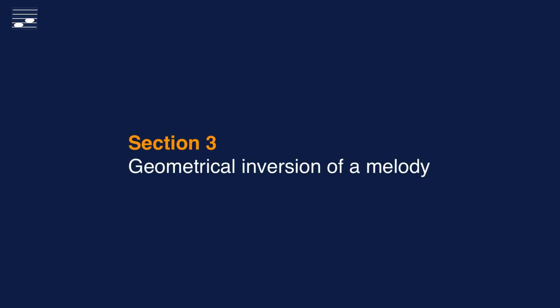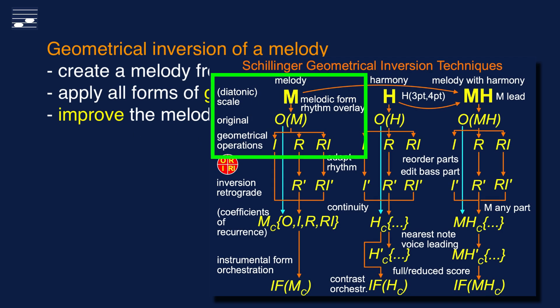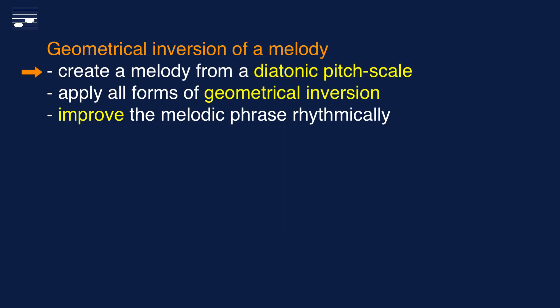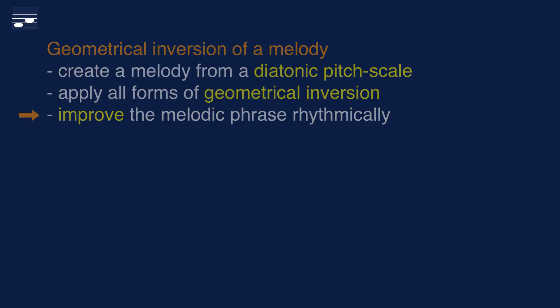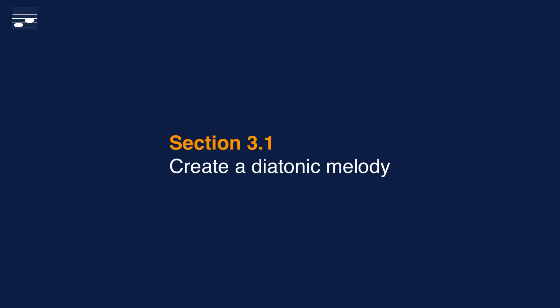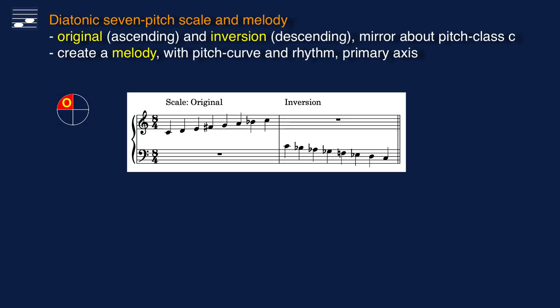Now that you saw the four fundamental inversion operations, let's look at a more realistic melody example. We'll create a diatonic melody, apply all geometrical inversion variations, and improve the melodic phrase rhythmically. You may create a diatonic melody from any diatonic scale. Here, a modified C major scale with raised fourth degree, pitch F sharp, and lowered seventh degree, Bb. It is called the acoustic scale, or the mixolydian modal scale with raised fourth.